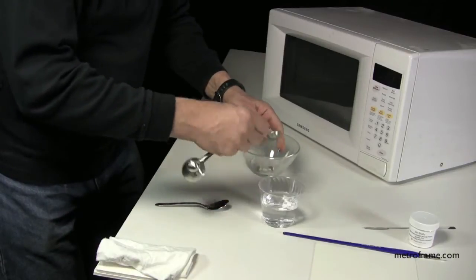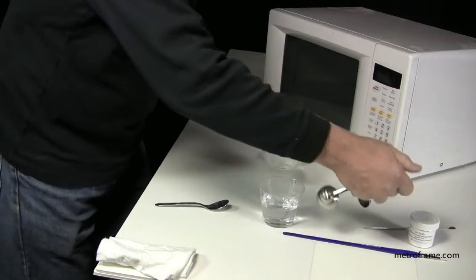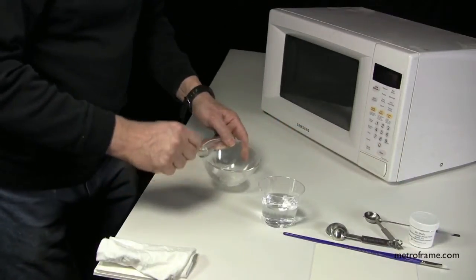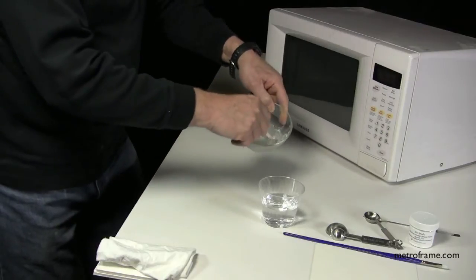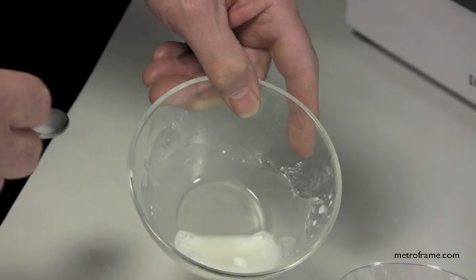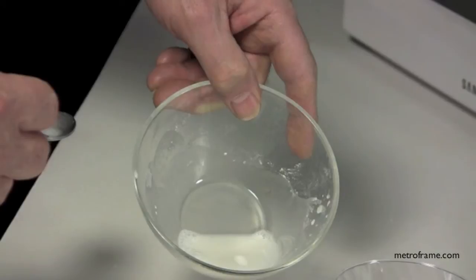We then take our spoon and stir it up. This is what it will look like before you put it in the microwave.